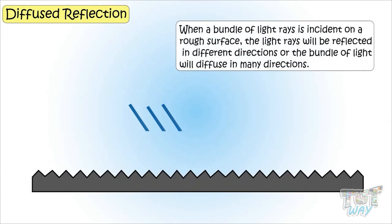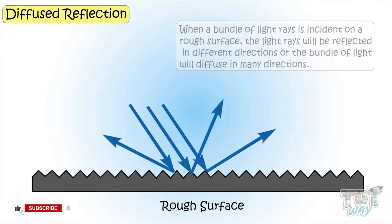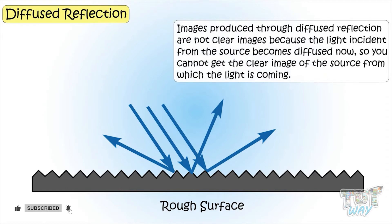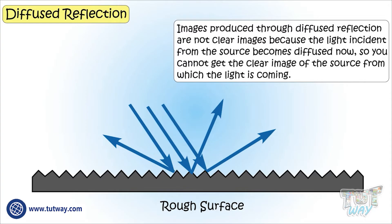In diffuse reflection, the light rays are reflected in different directions. A bundle of light diffuses in many directions. Images produced through such diffuse reflection are not clear images, because the light incident from the source is diffused.